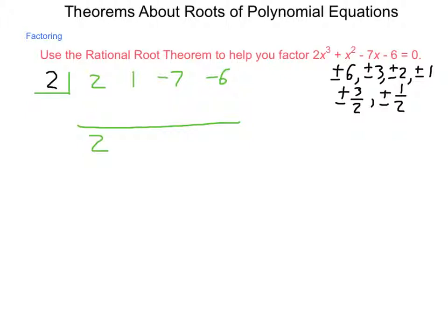So first thing we do is we bring down our lead coefficient. The 2 is already there, and then we multiply. 2 times 2 is 4. Add this together, that gives us 5. 5 times 2 is 10. Add this together, it gives us 3. 3 times 2 is 6. Add those together, it gives us 0. Because we have a 0, that means that this was a root. I lucked out in this case.